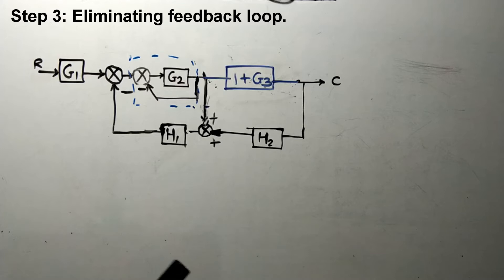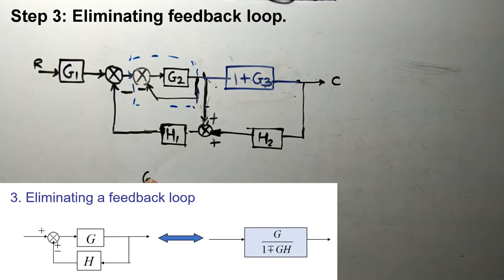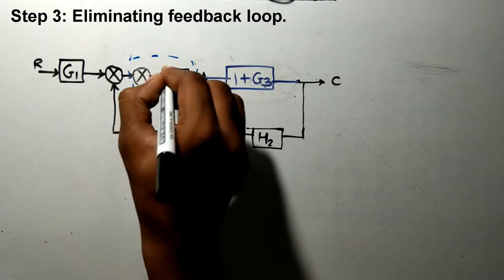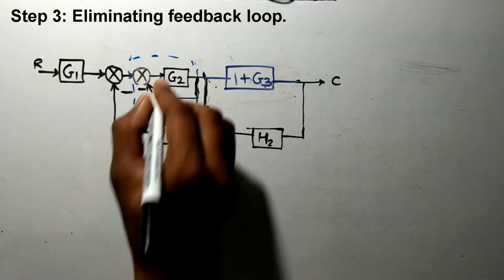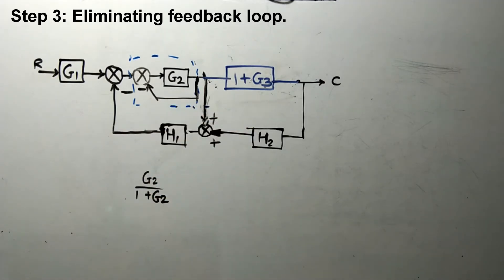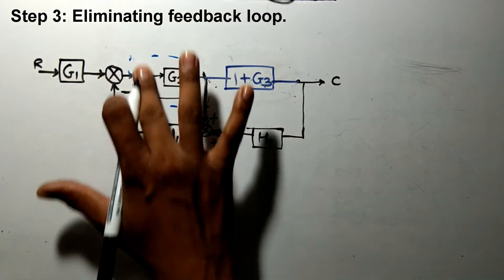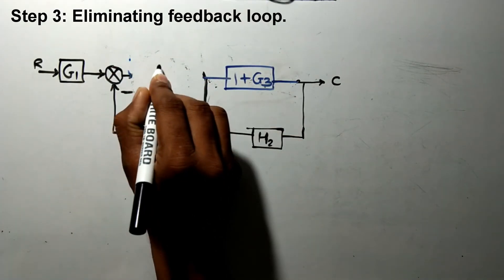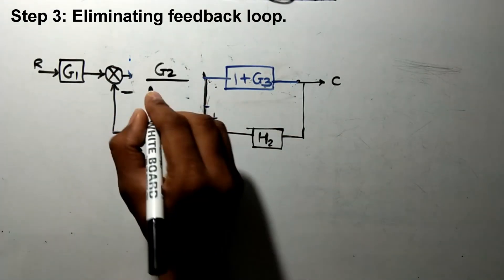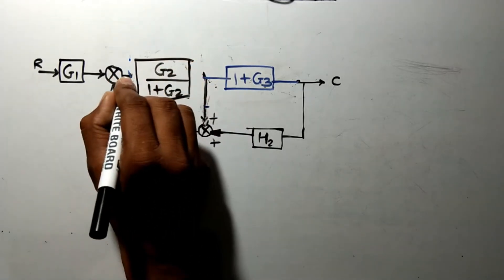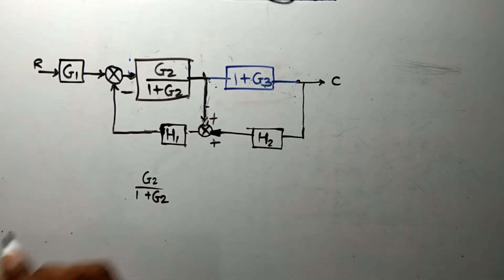This is step number 3: eliminating the feedback loop. Using G divided by 1 plus GH, where G is G2, and as it has a negative sign the result is 1 plus G2 into H2. Since it has unity feedback, this summing point and feedback loop are now replaced by the transfer function G2 over 1 plus G2. This is the modified block diagram.